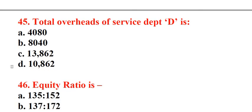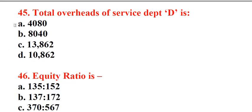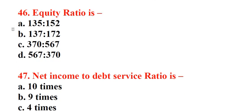Question 45: Total overheads of service department. A. 4080, B. 8040, C. 13862, D. 10862. Answer: A. 4080. Question 46: Equity ratio is. A. 135 to 152, B. 137 to 172, C. 370 to 567, D. 567 to 370. Answer: C. 370 to 567.